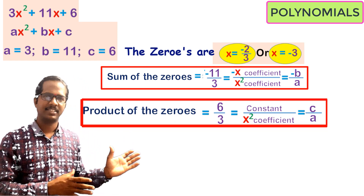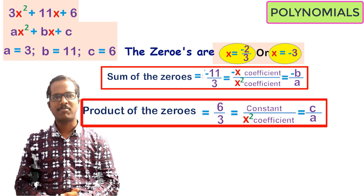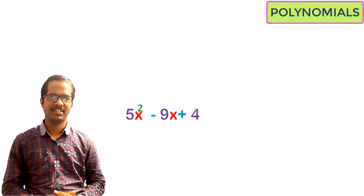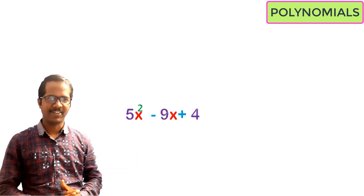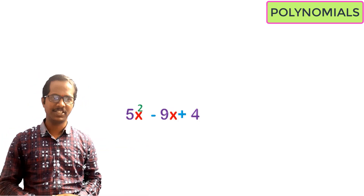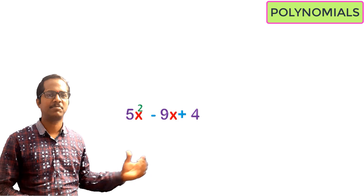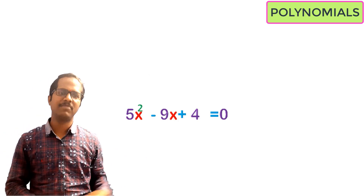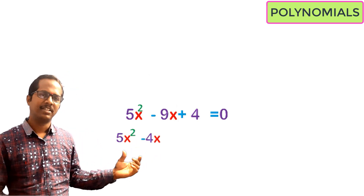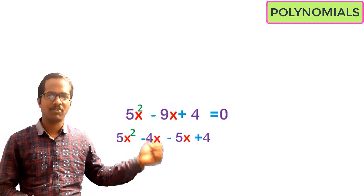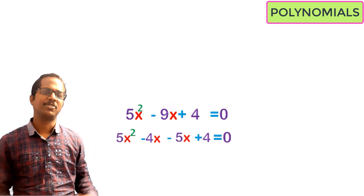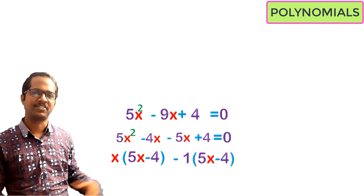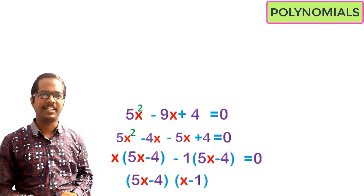Let us verify whether this is true for any quadratic polynomial by taking another example: 5x² - 9x + 4. To find the zeros we equate with 0: 5x² - 9x + 4 = 0. We factorize by splitting the middle term -9x using factors of the product of x²-coefficient and constant term. Doing this, we get the factors as (5x - 4) and (x - 1).